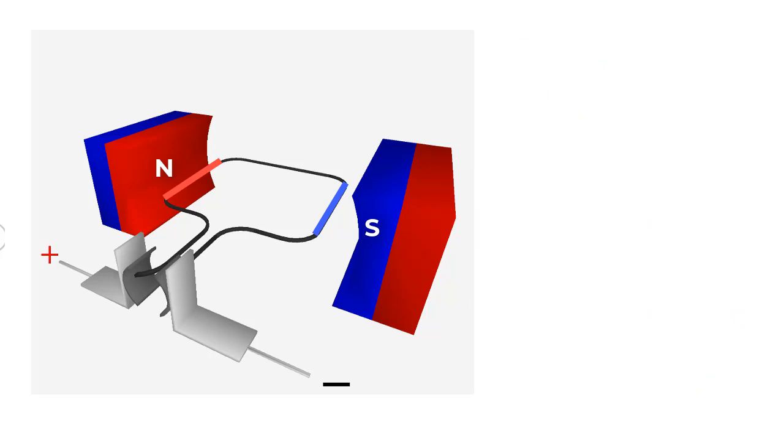Let us look at a very simple direct current motor where the moving part is a rotor that is nothing but a rectangular loop of wire which is open-ended and free to rotate about an axis.